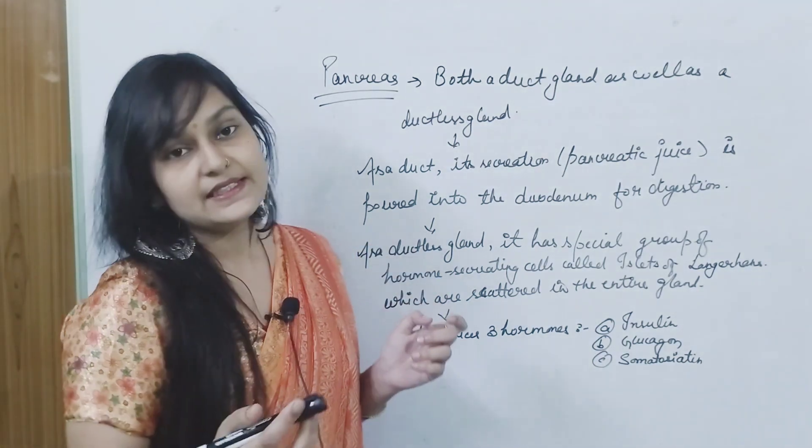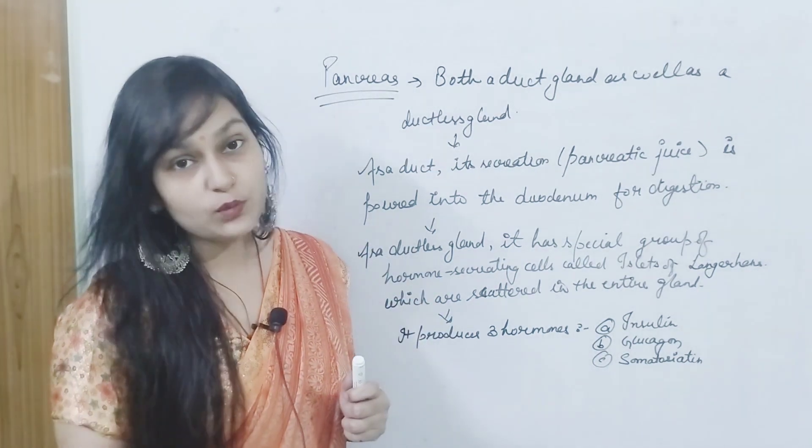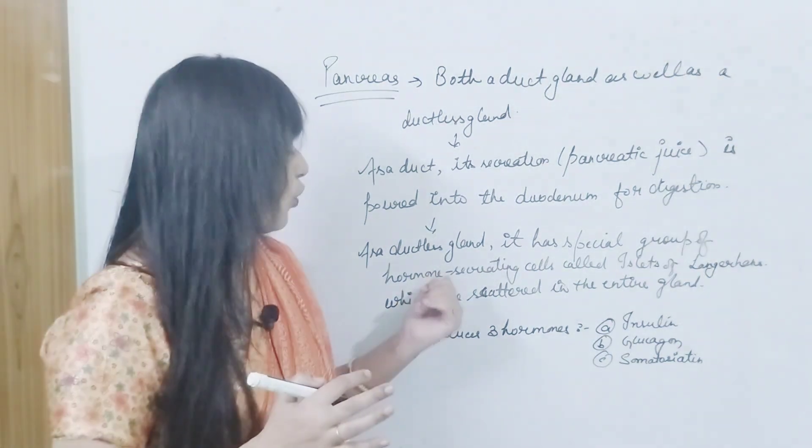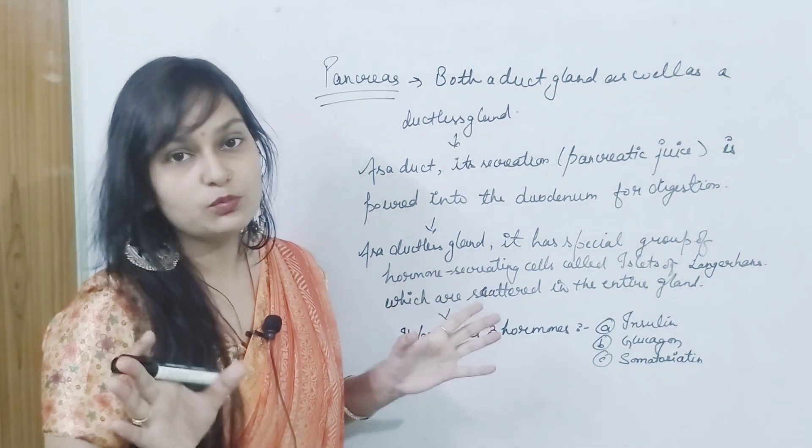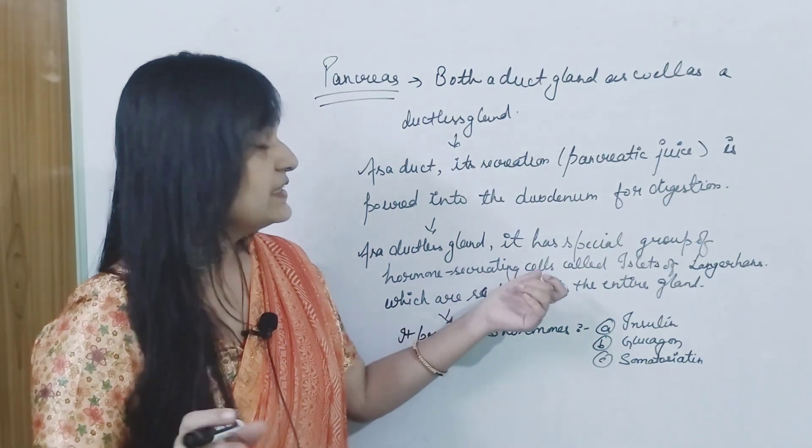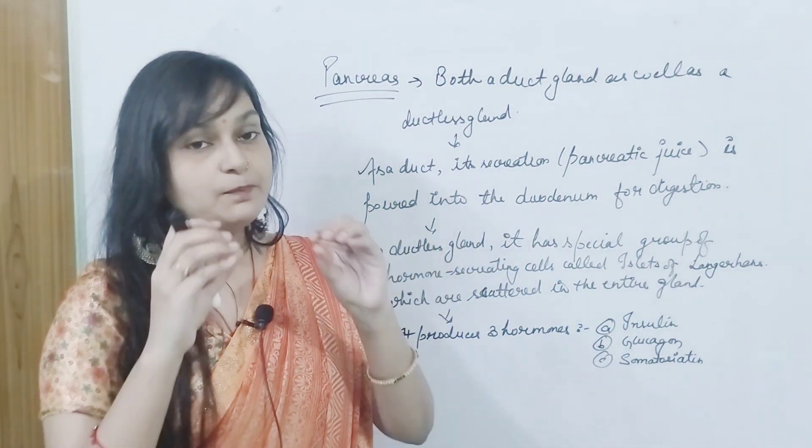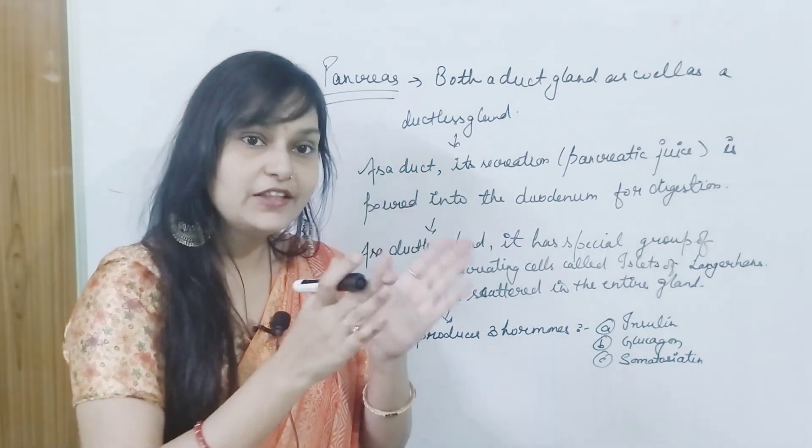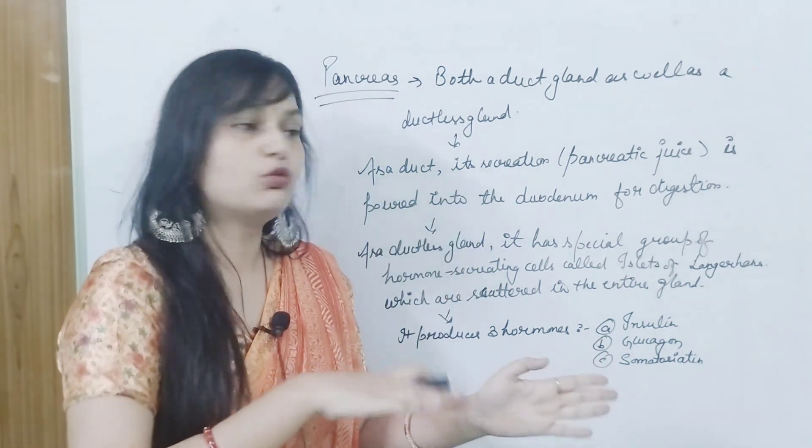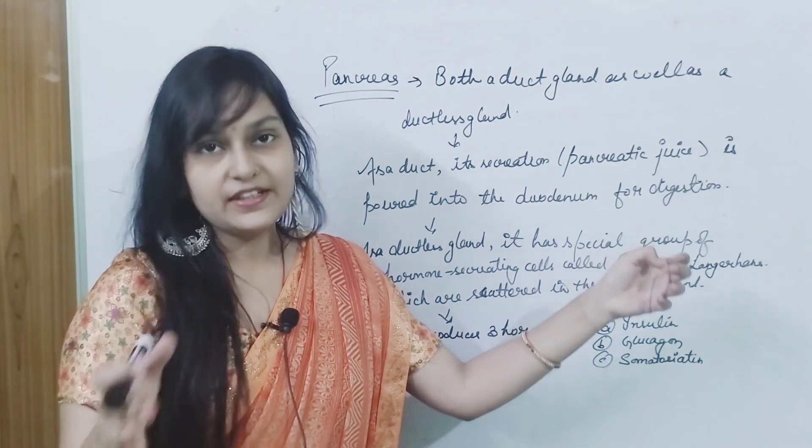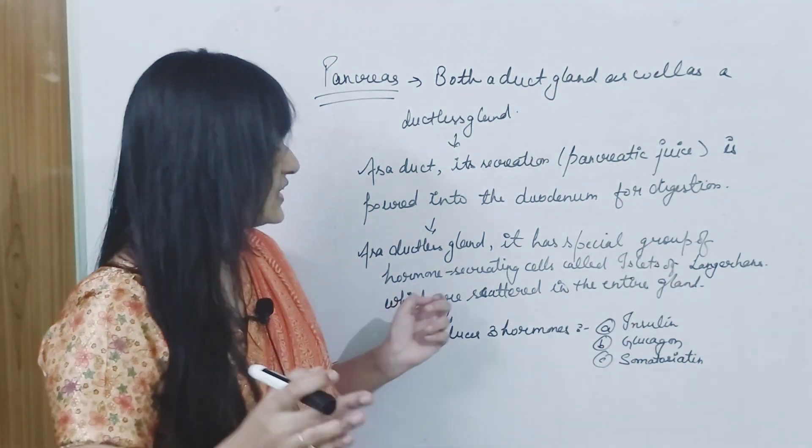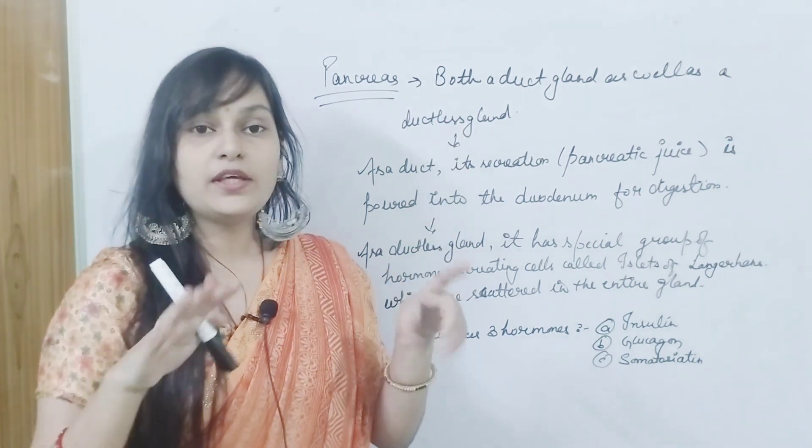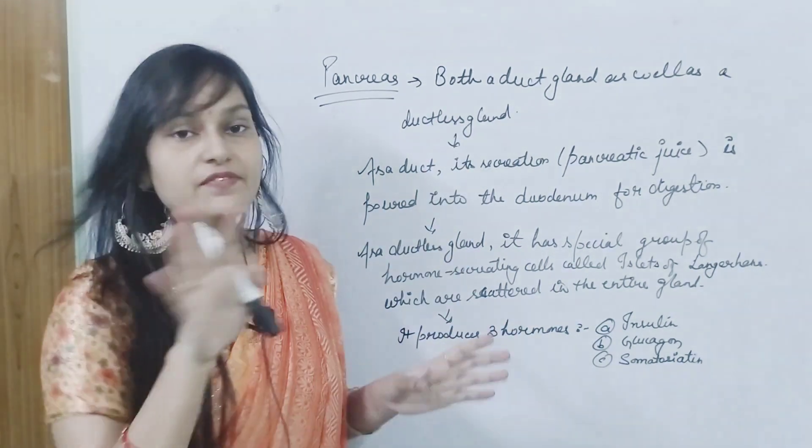As a ductless gland, which secretes the hormones, it has a special group of hormone secreting cells. What do we call? Islets of Langerhans. Which are scattered in the entire gland. The pancreas are scattered in the entire gland. There is no specific site.